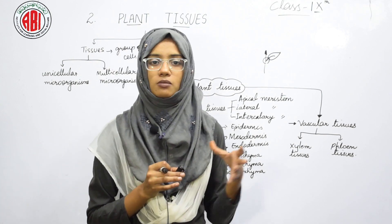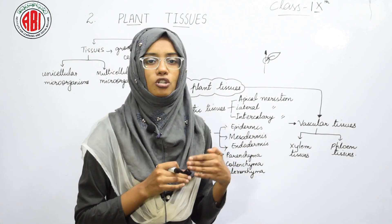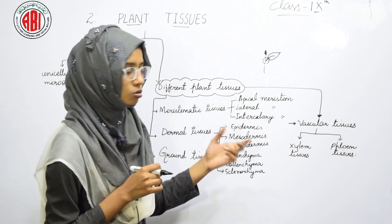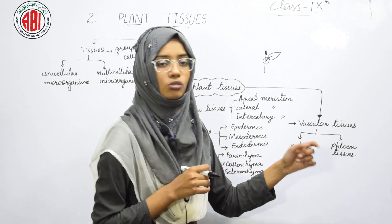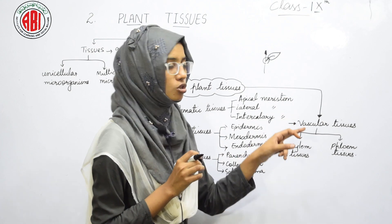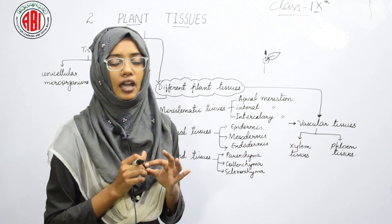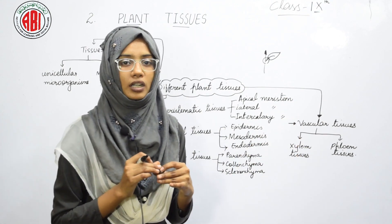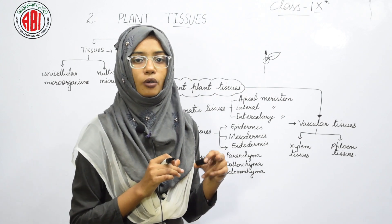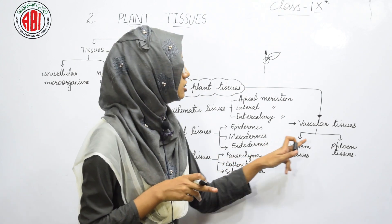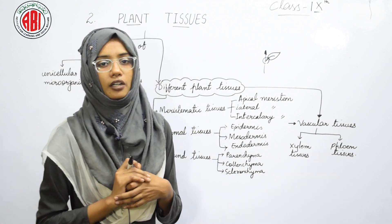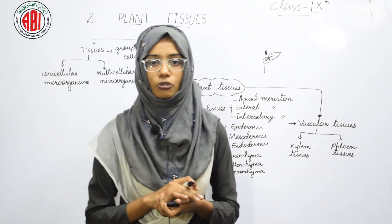Vascular tissues are classified into two main types: xylem tissues and phloem tissues. Xylem tissues help in the transportation of water and minerals from the soil into the plants. Phloem tissues help in the transportation of food material — the food prepared by the leaves is distributed by these specialized phloem tissues. With this we have completed our lesson on plant tissues. Thank you.